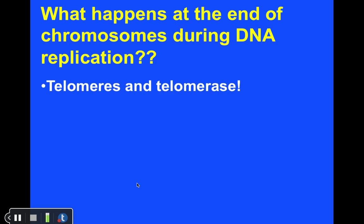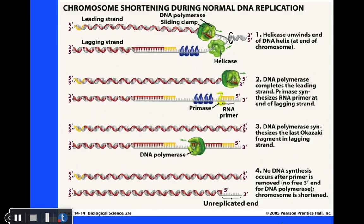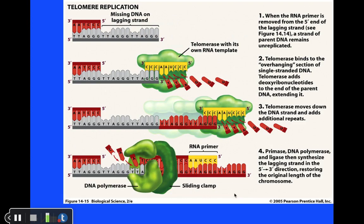There are important regions at the ends of our chromosomes called telomeres, and an enzyme called telomerase that helps extend the length of our chromosomes. At the end of a chromosome, when an RNA primer is removed, you are left with an unreplicated portion at the end because there is nothing further right for new DNA bases to be added to. So every time our cells divide and DNA replication occurs, the ends of our chromosomes have the potential to get shorter and shorter.